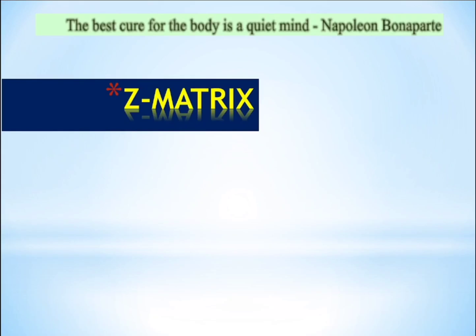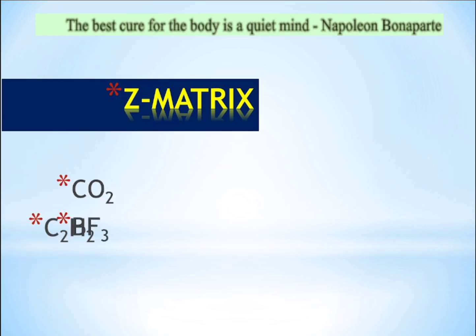Hello everyone. I am going to discuss the Z-matrix of carbon dioxide, BF3, and C2H2. C2H2 is acetylene. What is this Z-matrix?